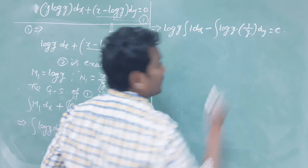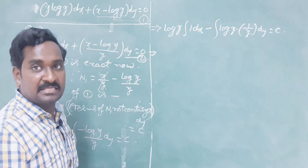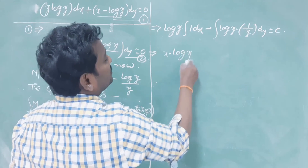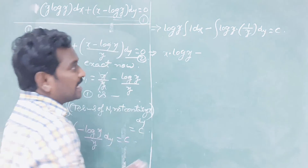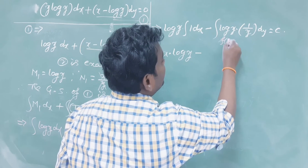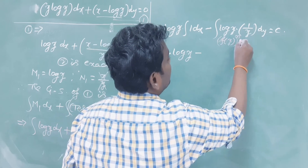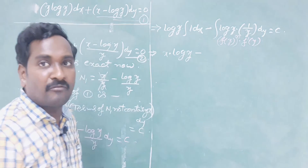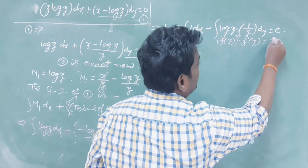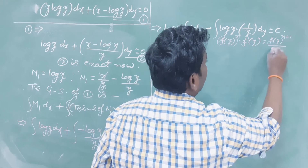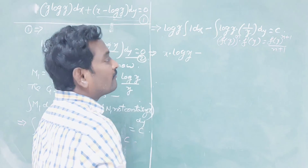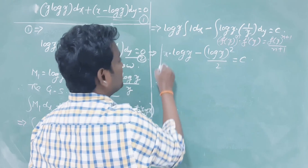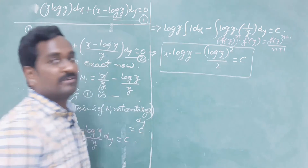The result so far is x·log(y) minus ∫log(y)·(1/y) dy = c. The second integral is in the form ∫[f(y)]^n · f'(y) dy, where f(y) = log(y) and f'(y) = 1/y. Using the power rule, the result is (log y)²/2. Therefore, the required general solution is: x·log(y) - (log y)²/2 = c.